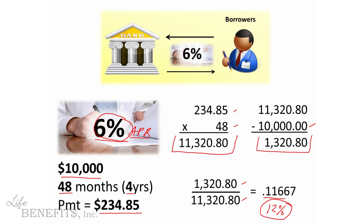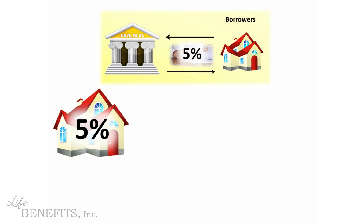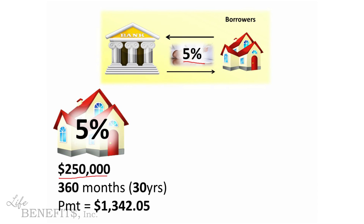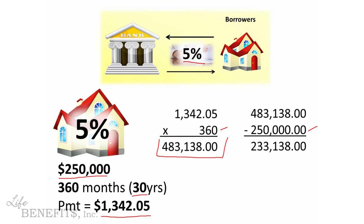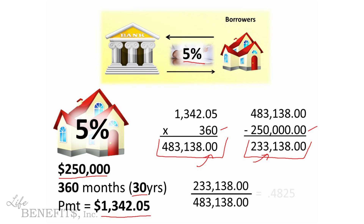Now let's take a look at another example of volume of interest. In this case, the bank is lending money out on a house and charging an interest rate of 5%. Let's assume this house loan was for $250,000 over a 30-year period — a 30-year mortgage. That brings a monthly payment of $1,342.05 per month. Using the same steps: $1,342.05 times 360 monthly payments gives total payments of $483,138. Subtracting the original $250,000, we get $233,138 as total interest. Dividing total interest by total payments gives 0.4825 — roughly 48% volume of interest.